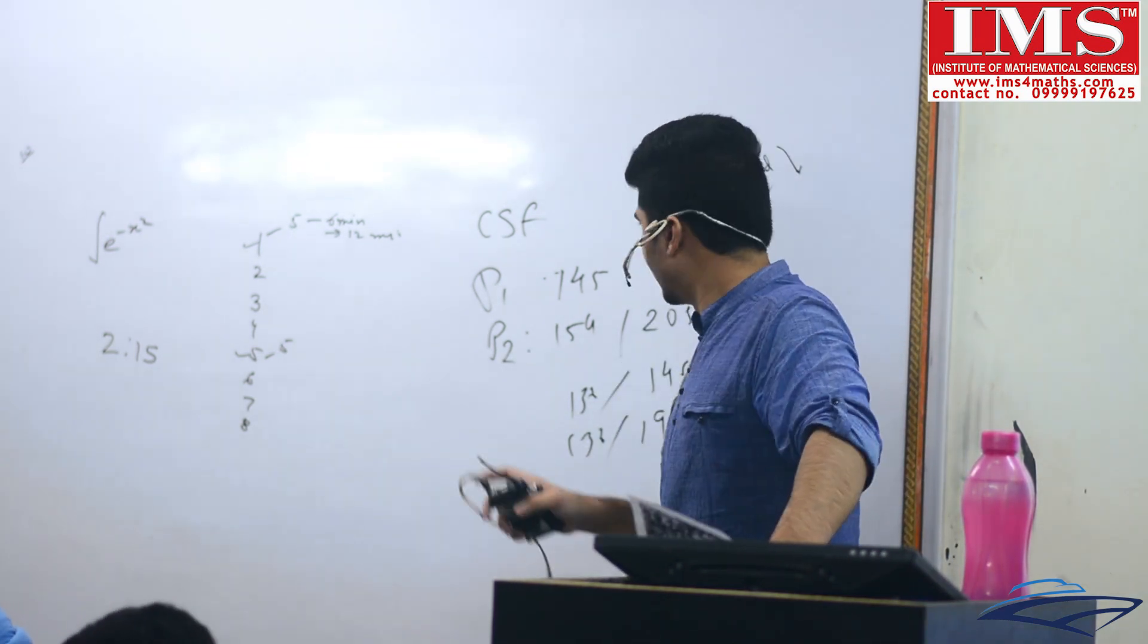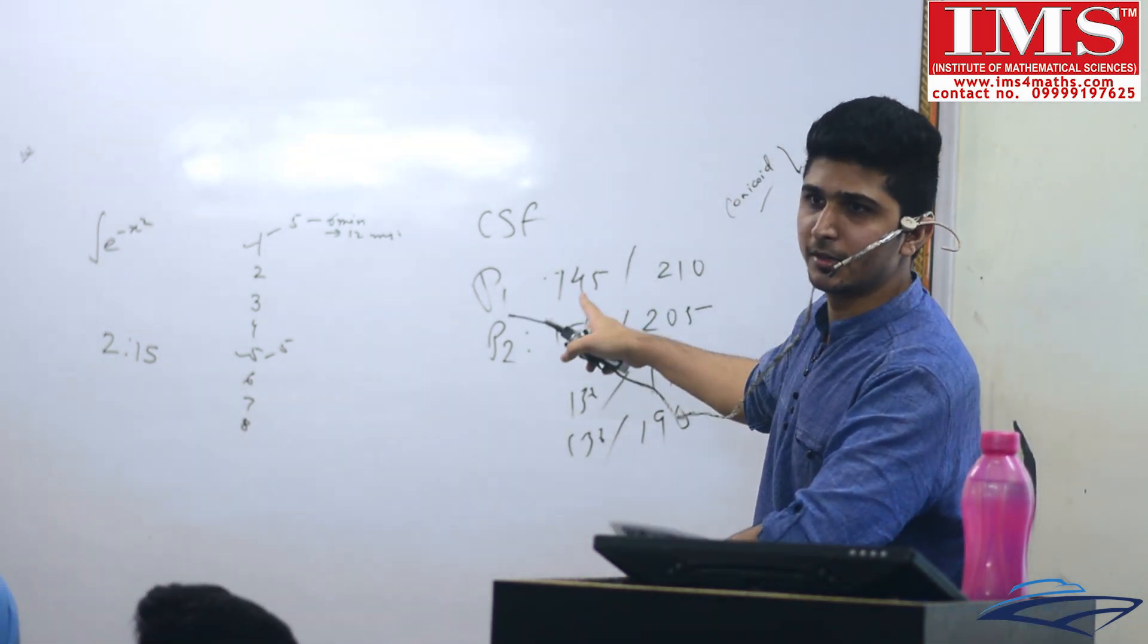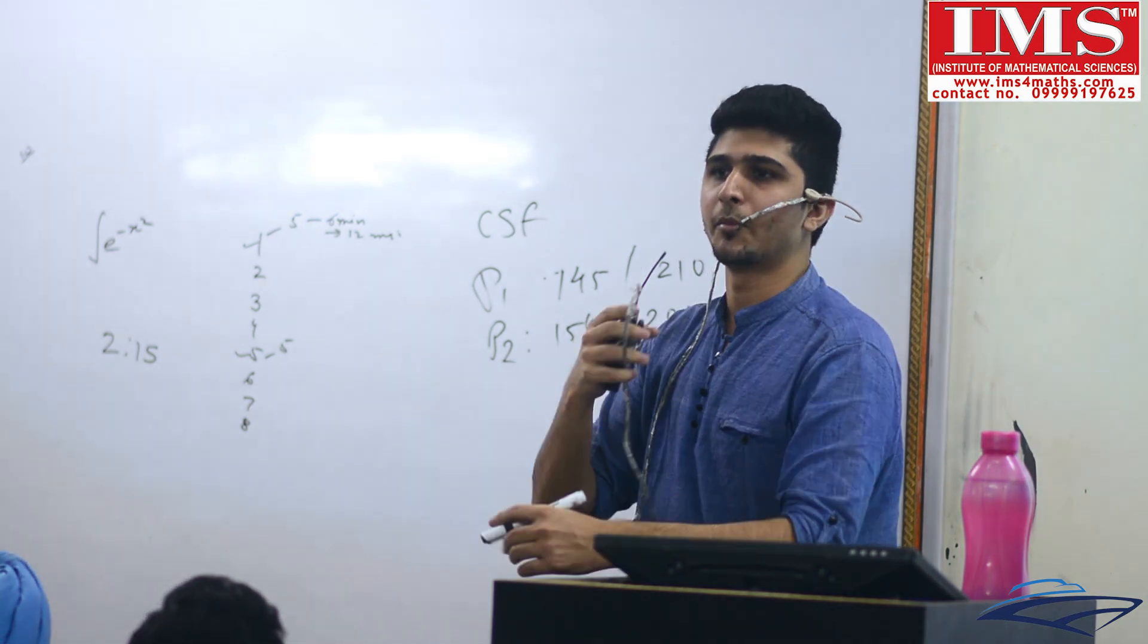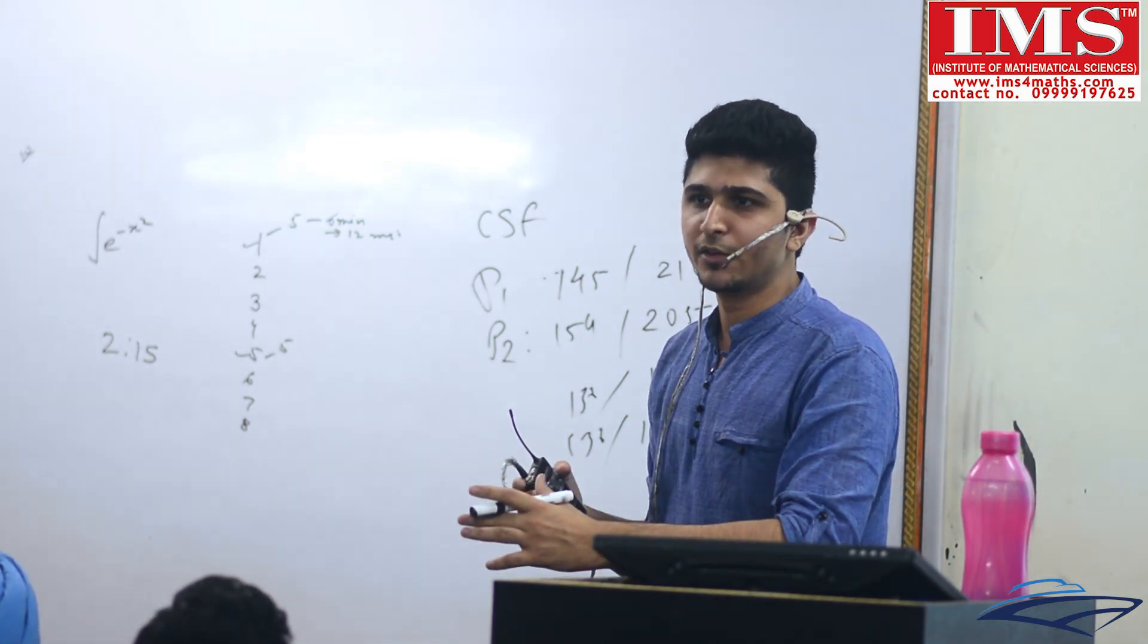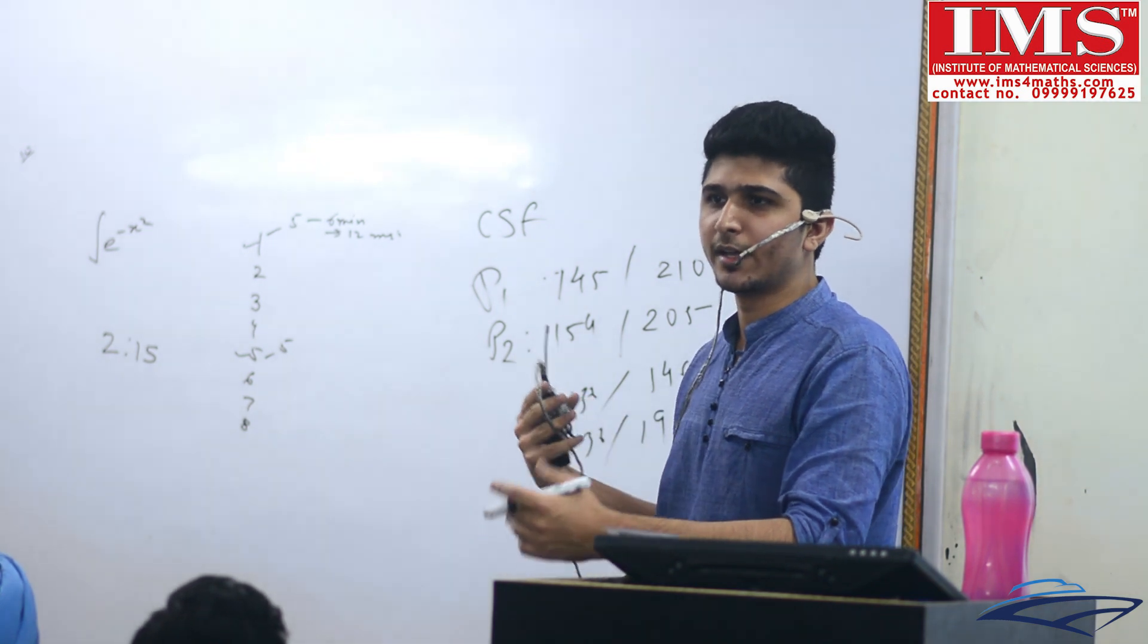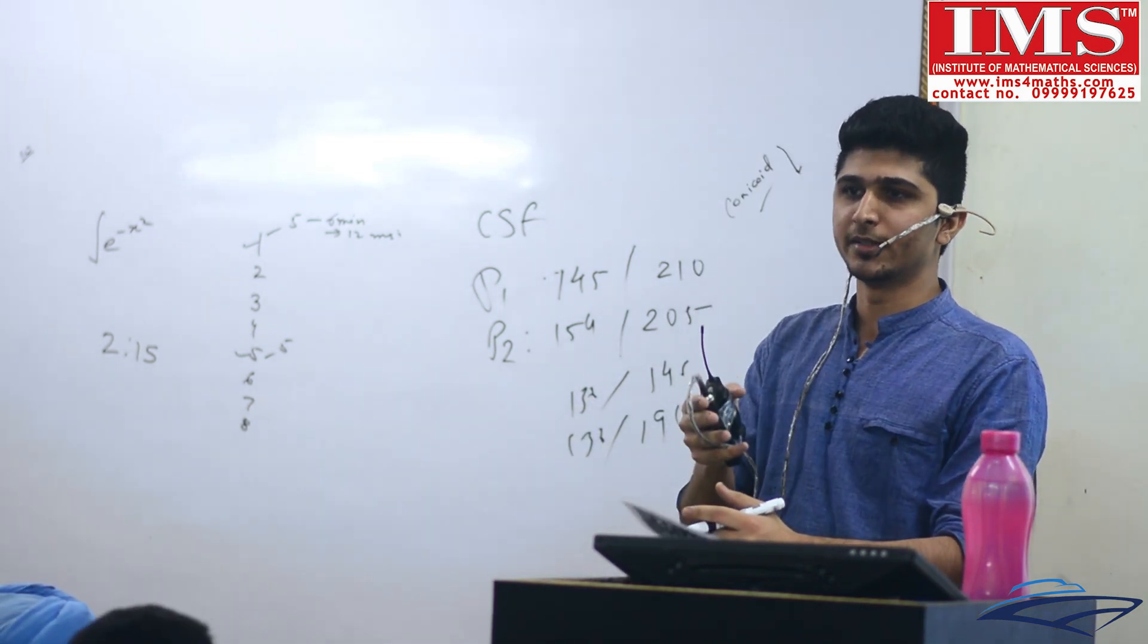My attempted marks were also important to mention. Generally what happens is people attempt around 450, 440. This time generally people attempted around 440 but their marks were around 280, 270 types. So problem was with accuracy.